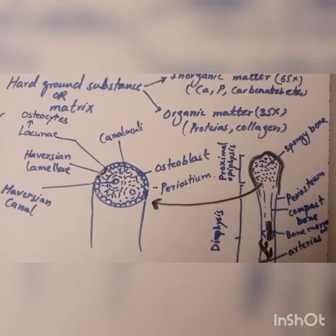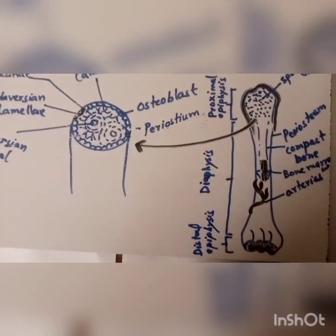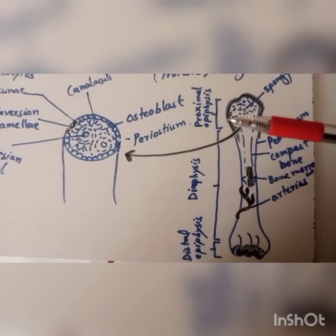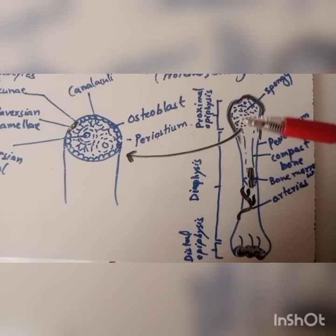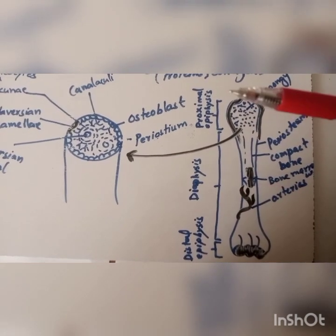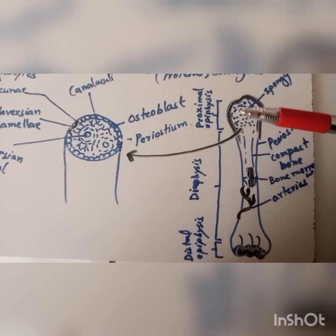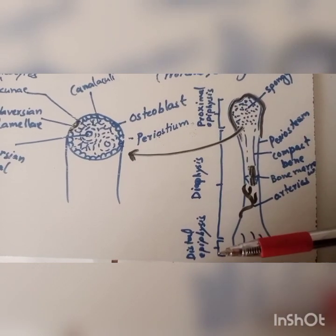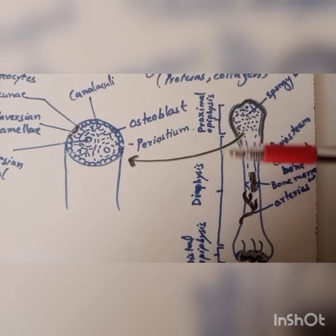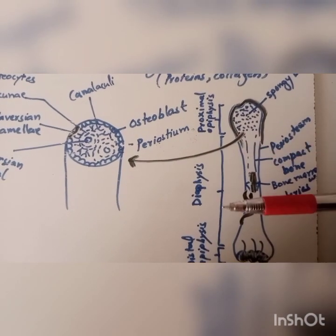If we look at the diagram of the long bone here, it consists of epiphysis and diaphysis. Epiphysis, that is proximal epiphysis and distal epiphysis, while the central portion is called diaphysis.